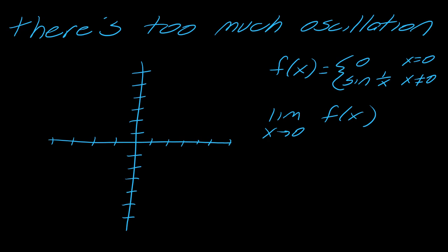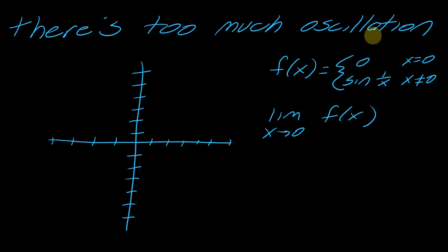The last case is a limit that has too much oscillation. I'll try to draw this graph. The function is f(x) = 0 when x equals 0, and otherwise it's sine of 1 over x when x does not equal 0. The reason we split it up like this is so that we have a value for every value of x. And you can notice that with sine of 1 over x, you can't plug in x equals 0.